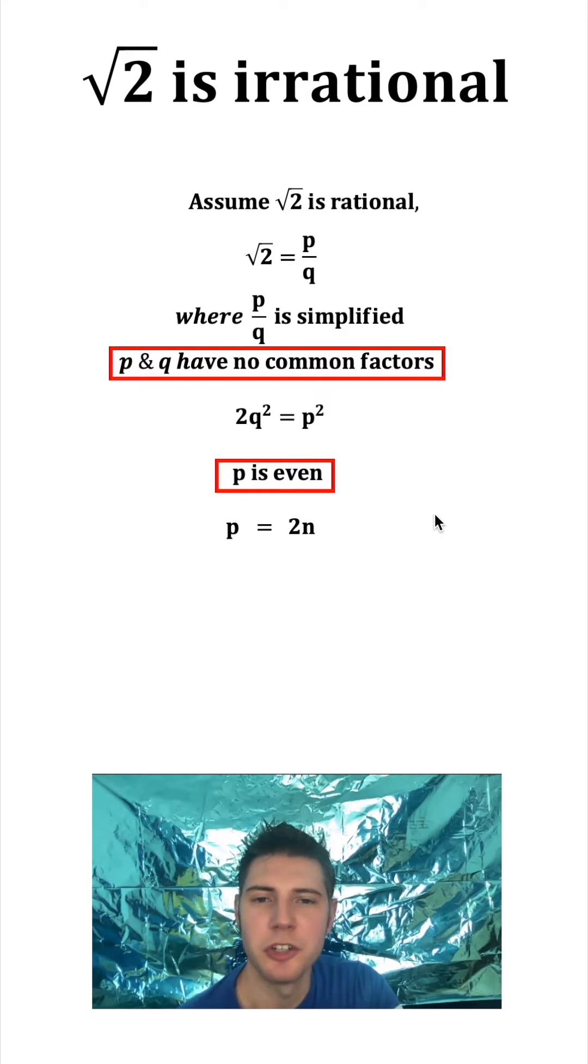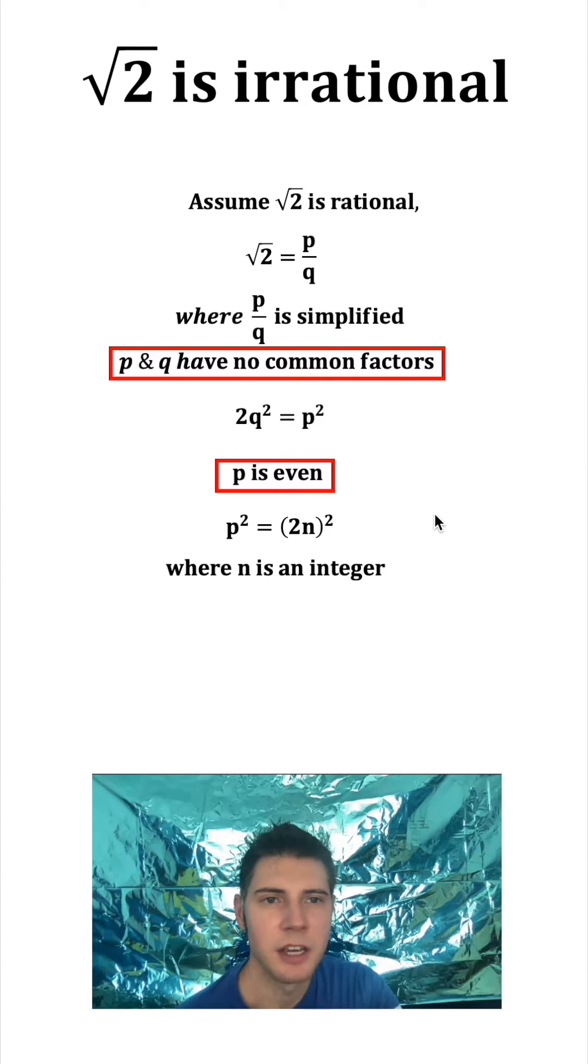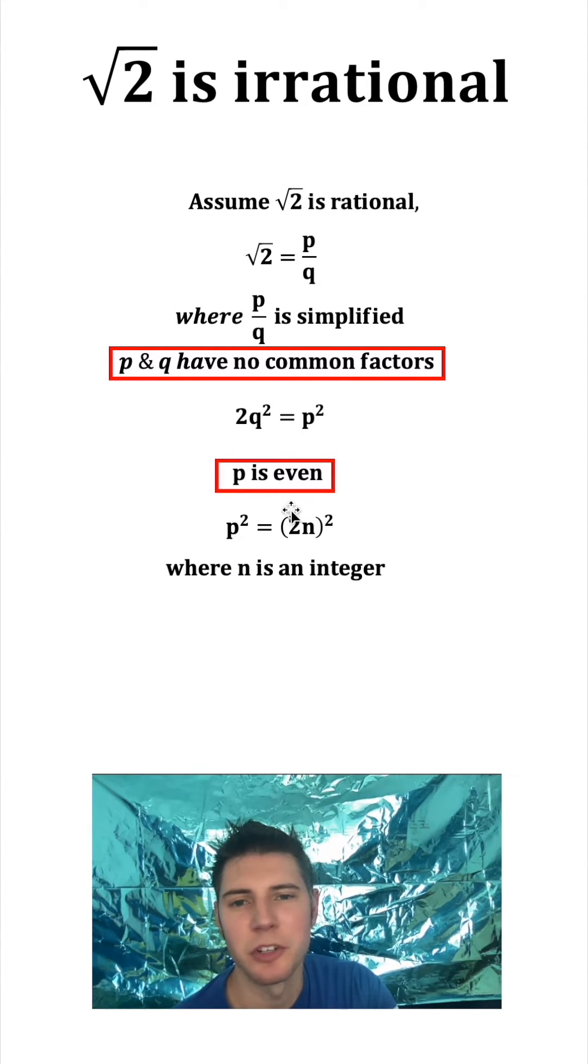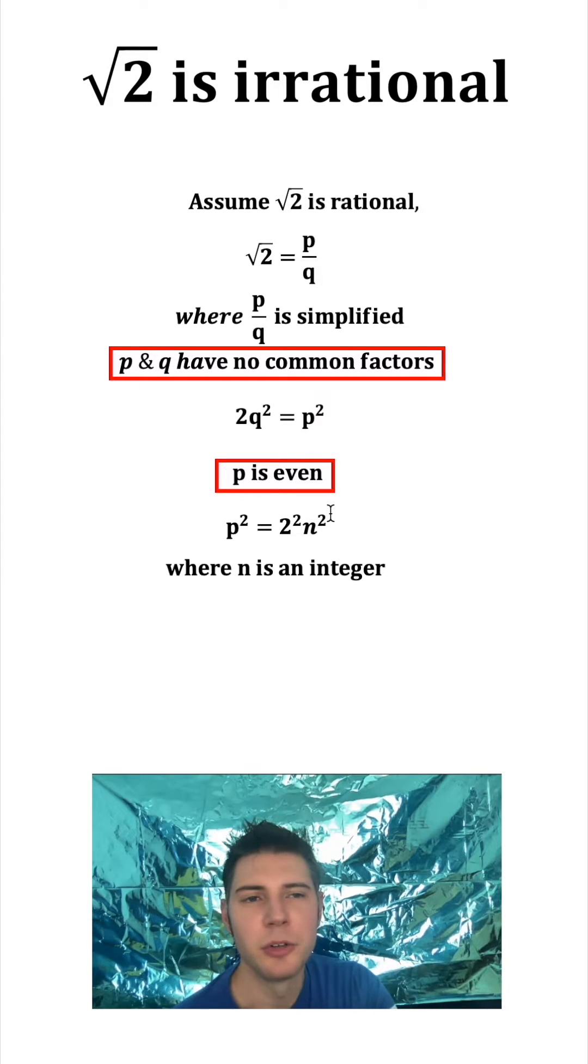Let's get rid of all this stuff. Since P is even, we can say P is equal to 2N, where N is some integer. If we square both sides, distribute this exponent 2 to both the 2 and the N, and then 2 squared is equal to 4. So now we have P squared is equal to 4N squared.